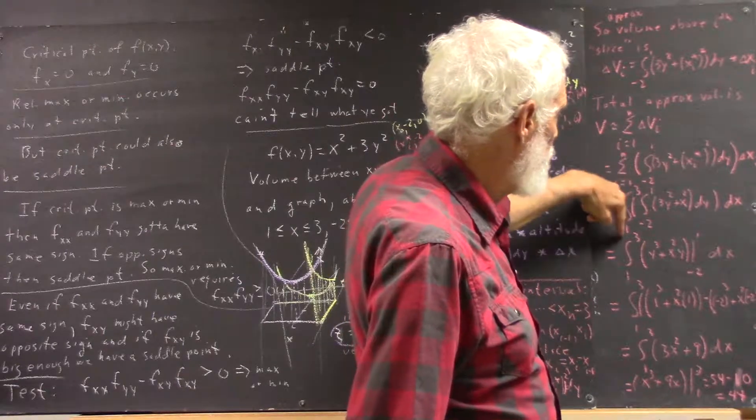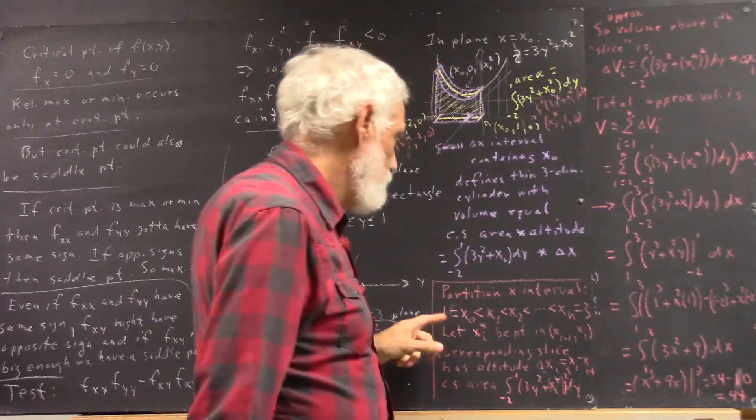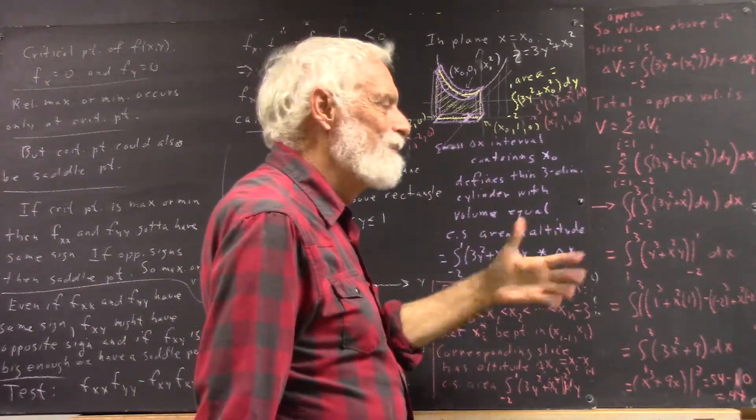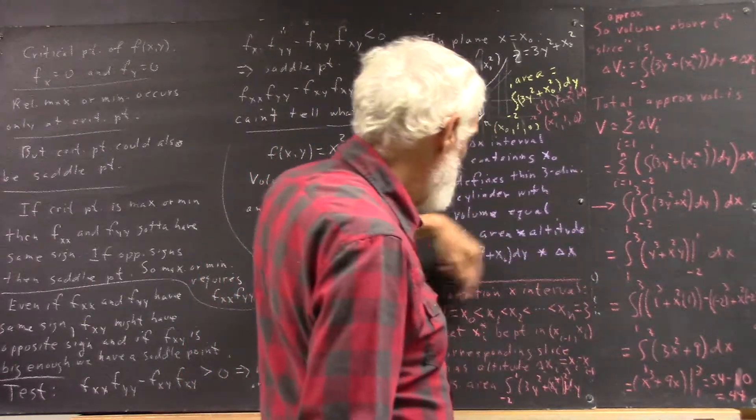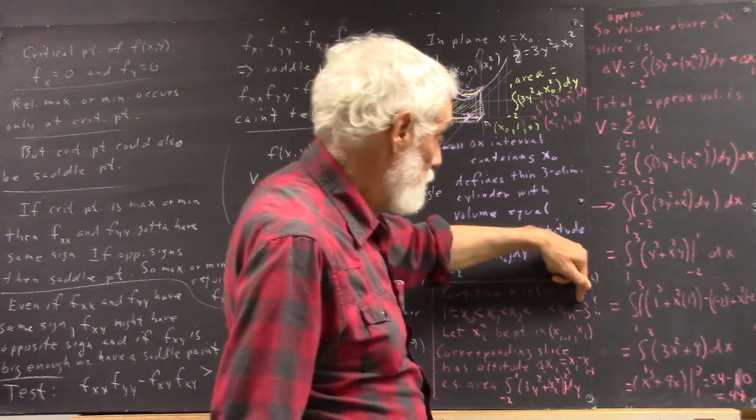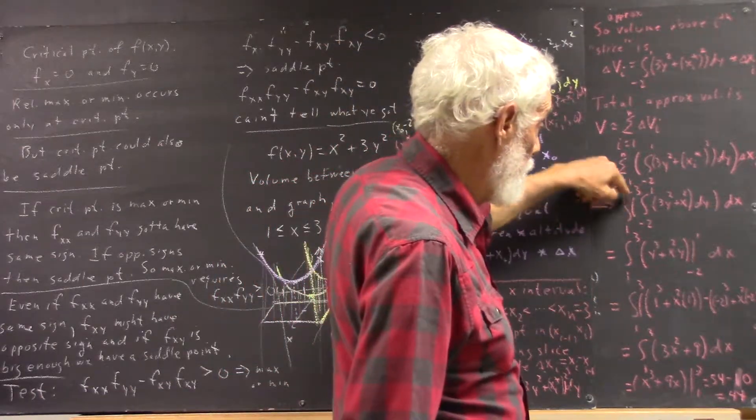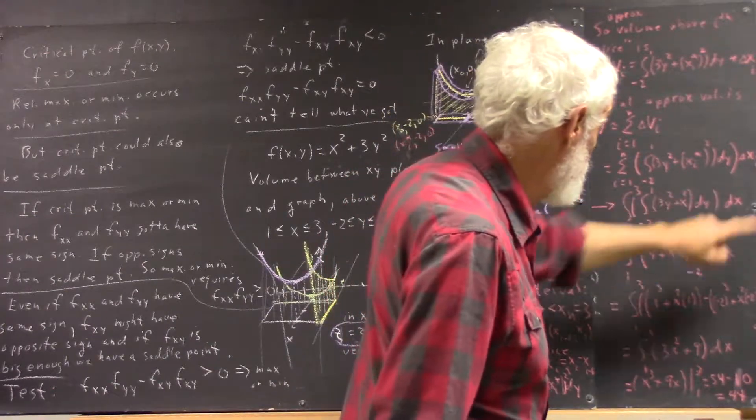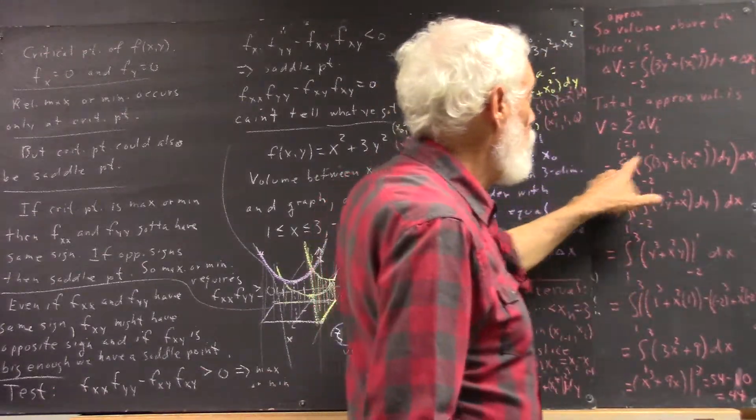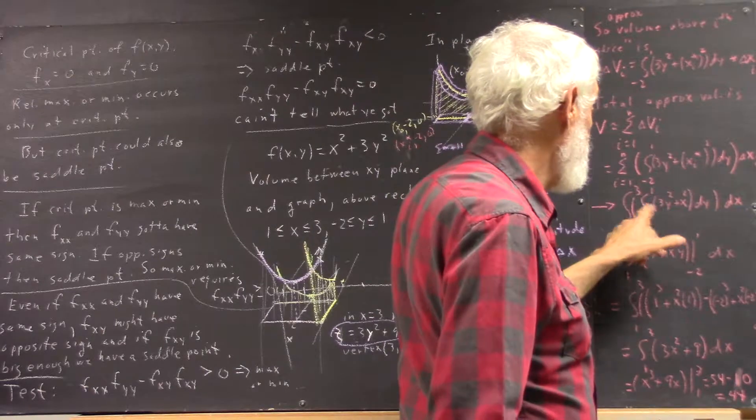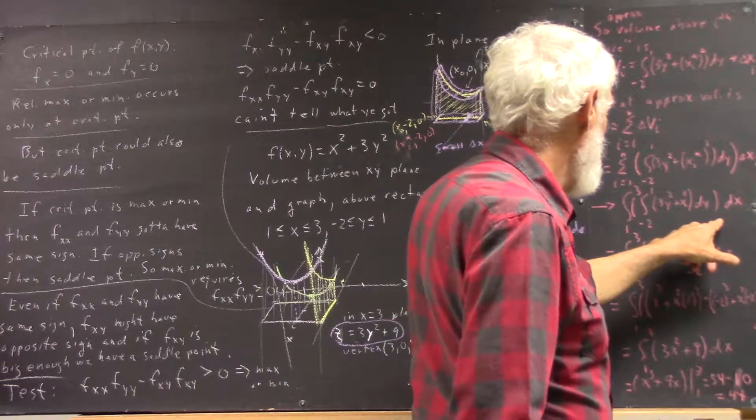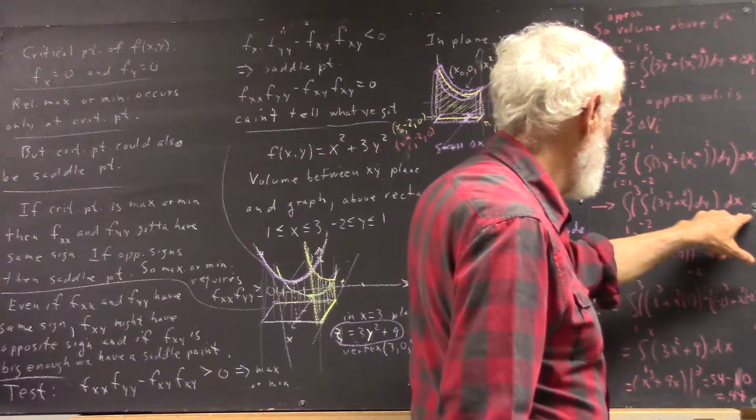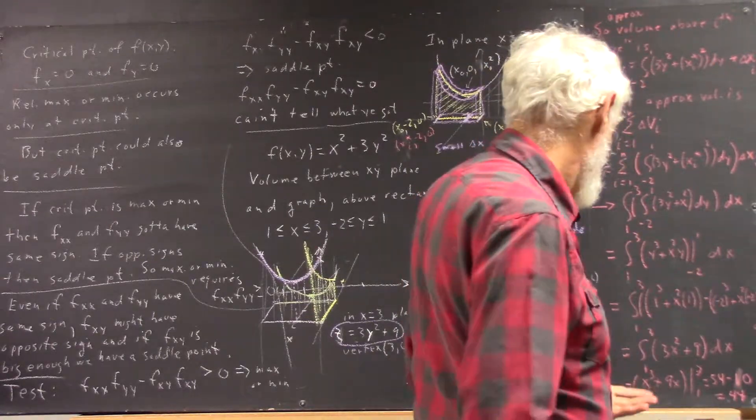And your sum becomes the integral from 1 to 3. The integral from the values of x that you partition, the interval between, the values of x at the endpoints of your interval are the values that you used in your partition. Those will be the values of your limits on the x integral. So we have this y integral inside, and then we integrate the result of that y integral with respect to x.